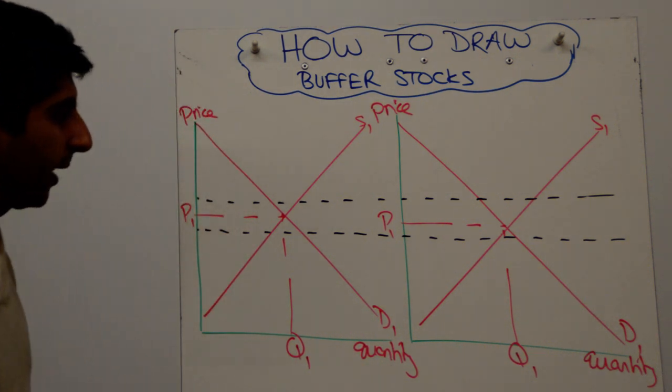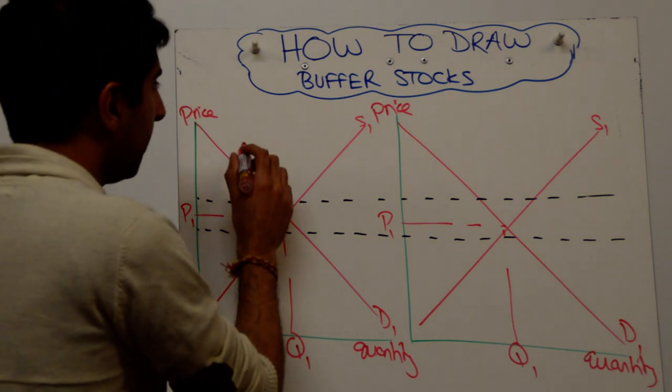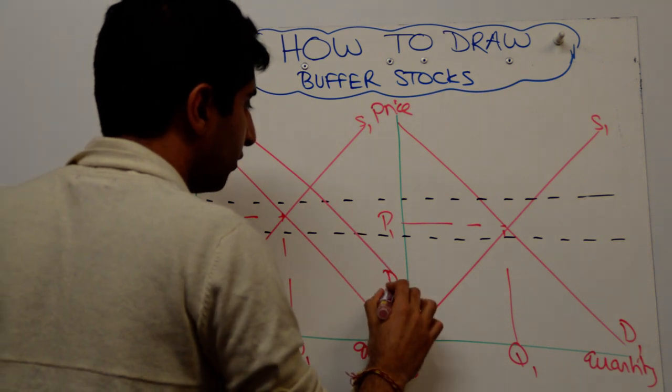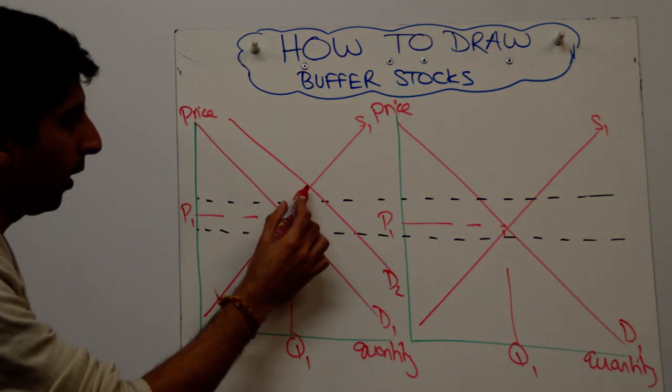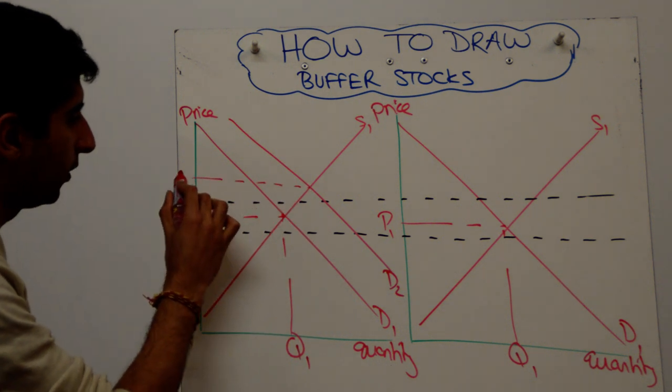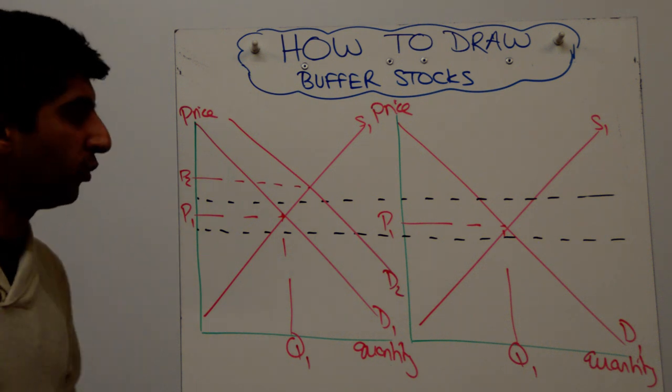On the left hand diagram, let's look at a commodity that's under pressure of rising in price, maybe because demand has shifted to the right. In the market, that will lead to a price of way up here, call it P2. And that is not allowed to happen. Governments think that that price is too high, it's going to harm consumers.